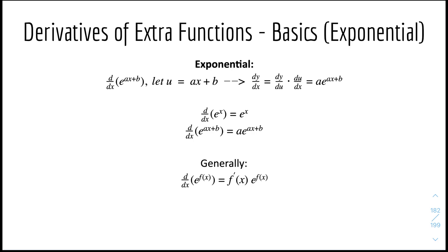We'll start off with exponential functions. So let's say we have the function e to the power of ax plus b. We can let u be ax plus b, so it will be e to the power of u. We can use the chain rule: dy/dx equals dy/du times du/dx, to find dy/dx, which would be a times e to the power of ax plus b. So the general rule is: the derivative of e to the power of f(x) equals the derivative of the function times the original equation.